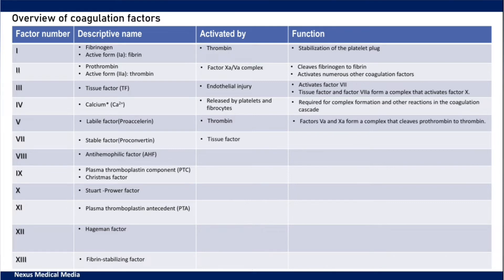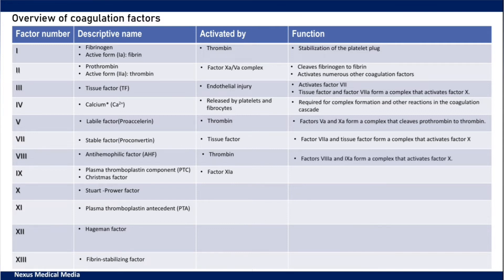Factor 7 is activated by tissue factor. The active form of factor 7 and tissue factor will form a complex that activates factor 10. Factor 8 is activated by thrombin. Factor 9 is activated by the active form of factor 11. The active forms of factor 8 and factor 9 will form a complex that activates factor 10.